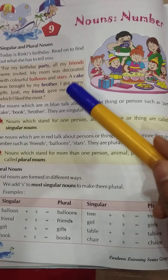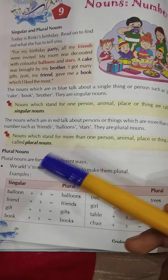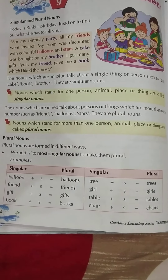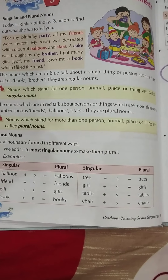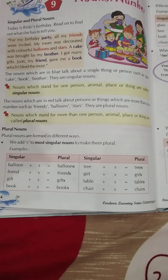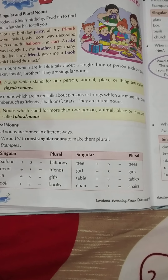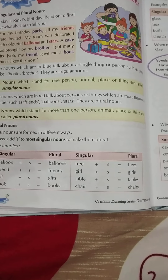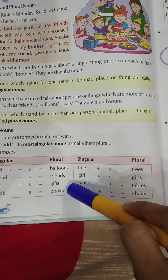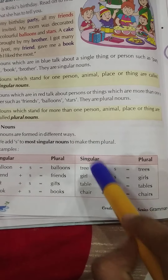Plural nouns are formed in different ways. Mostly, S is added, but not always. To make most singular nouns plural, we add S. For example: balloon becomes balloons, friend becomes friends, gift becomes gifts, book becomes books, tree becomes trees, girl becomes girls.